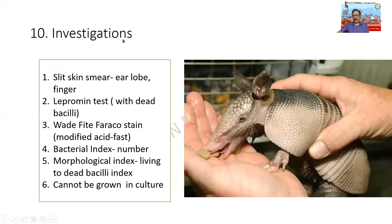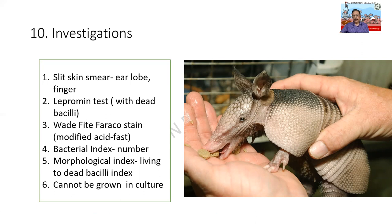What are the investigations that can be done in leprosy? One is a slit skin smear, either from the ear lobe or the finger. The lepromine test is done with dead bacilli. The Wade-Fite-Faraco stain is a modified acid-fast stain which stains the leprosy bacilli. The bacterial index was mentioned earlier. The morphological index is the amount of dead bacilli present. The disadvantage is that the bacillus cannot be grown in culture; however, the nine-banded armadillo shows similar features and has been used in laboratory study.